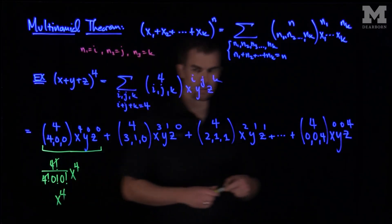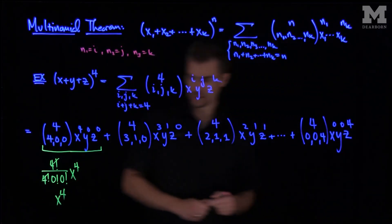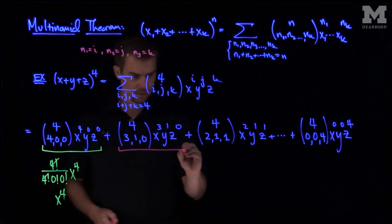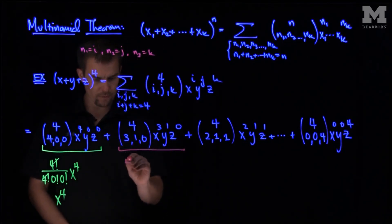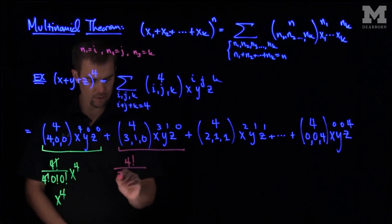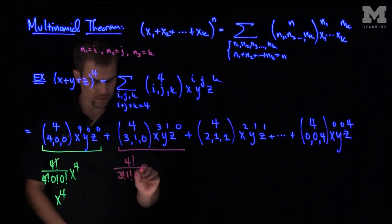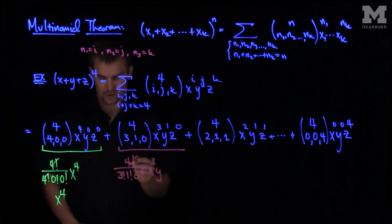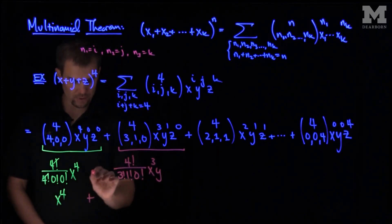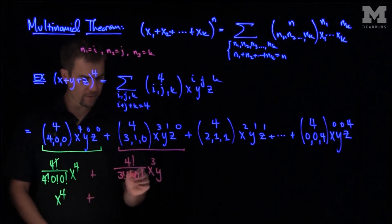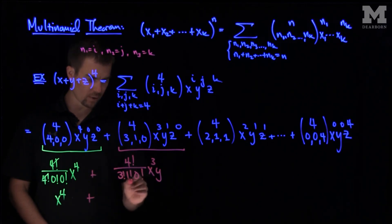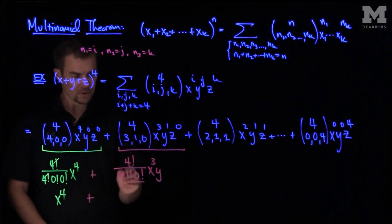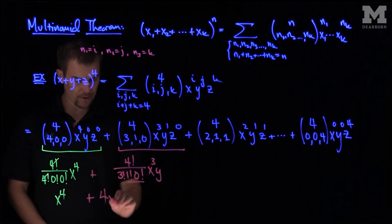If we go and look at the second term over here, for example, will be 4! over 3!1!0!, x³y. And so we see what this will simplify to will be 4! over 3!, because the 1! and 0! are both one. So this will be 4! over 3!, which is four, x³y.